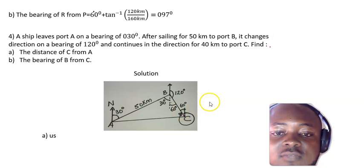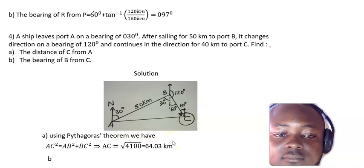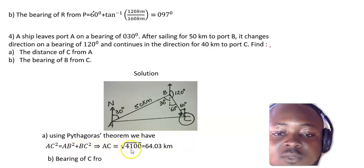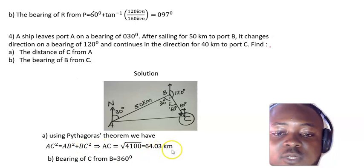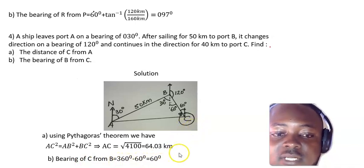Using Pythagoras theorem: AC² = AB² + BC², giving AC = 64.03 kilometers. The bearing of C from B is 360° minus 60°, as already explained.